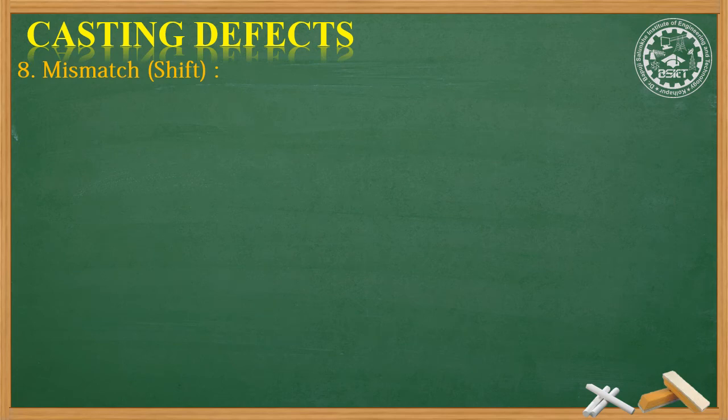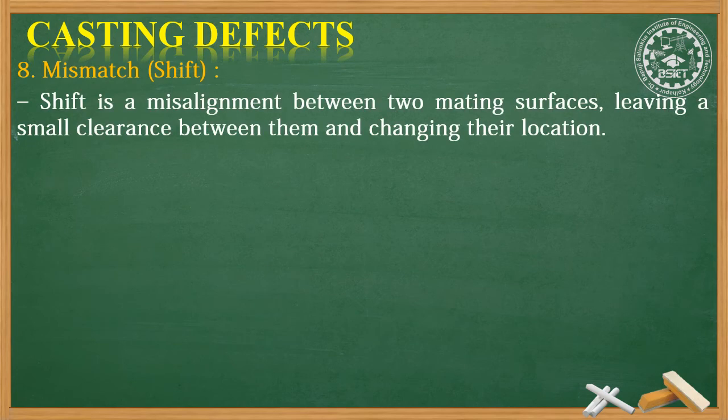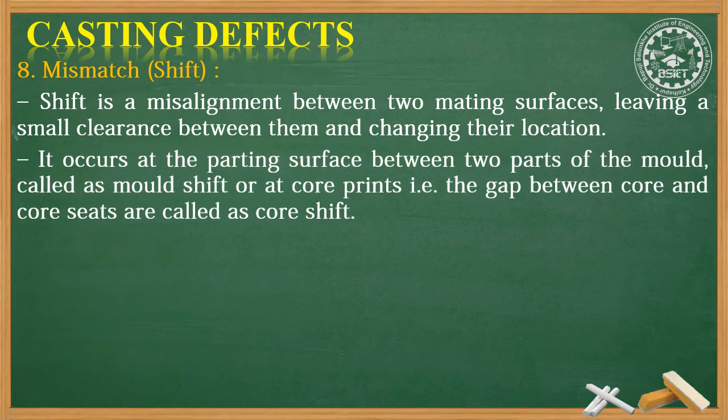Number eight is mismatch or shift. Shift is a misalignment between two mating surfaces, leaving a small clearance between them and changing their location. It occurs at the parting surface between two parts of the mold, called mold shift, or at core points, called core shift.